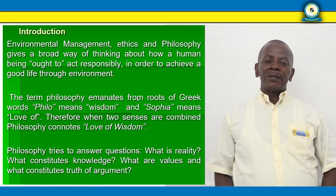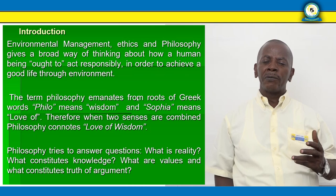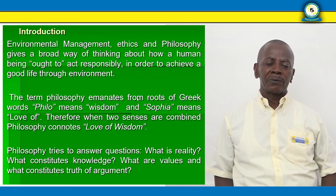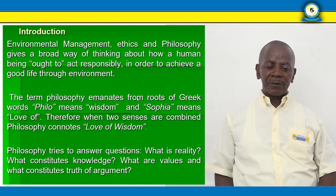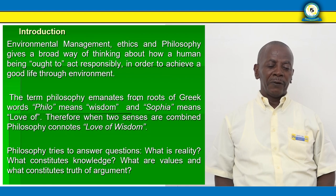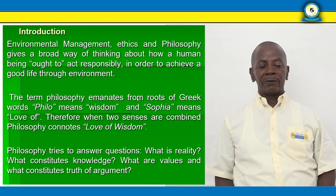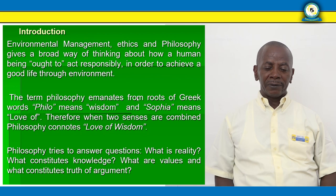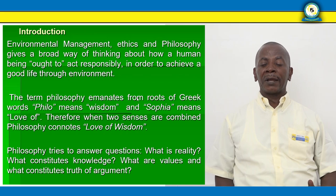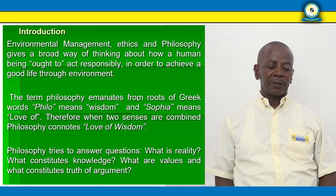Environmental management ethics and philosophy give a broad way of thinking about how human beings ought to act responsibly in order to achieve the good life through the environment. We don't want the environment to be destroyed. The term philosophy emanates from the roots of the Greek word: philo means wisdom and Sophia means love of. Therefore, when the two senses are combined, philosophy connotes love of wisdom. Philosophy tries to answer questions like: what is reality, what constitutes knowledge, what are values, and what constitutes truth of the argument.